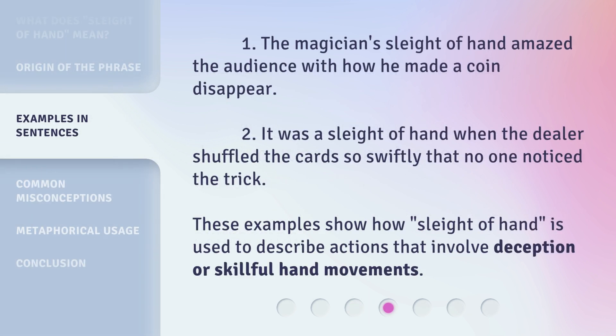1. The magician's sleight of hand amazed the audience with how he made a coin disappear. 2. It was a sleight of hand when the dealer shuffled the cards so swiftly that no one noticed the trick. These examples show how sleight of hand is used to describe actions that involve deception or skillful hand movements.